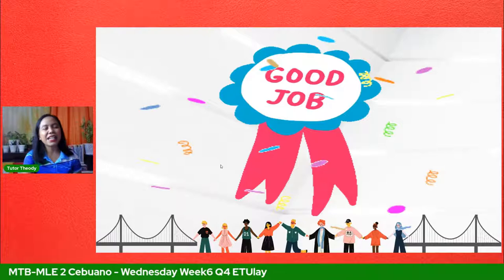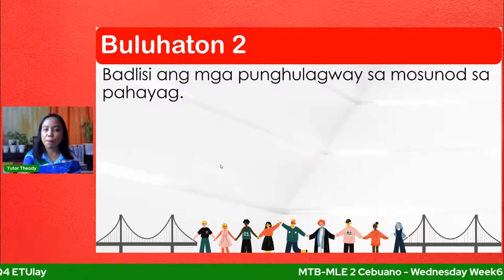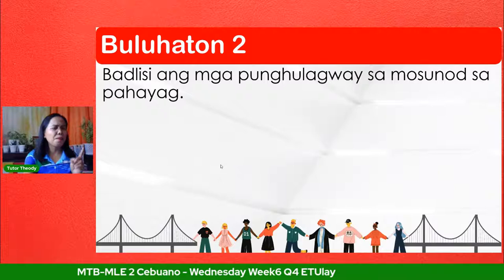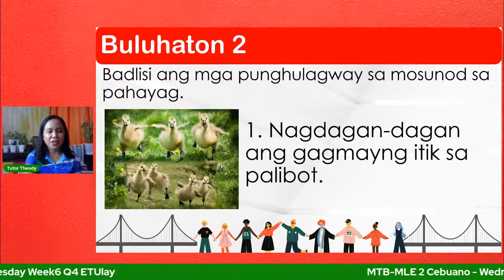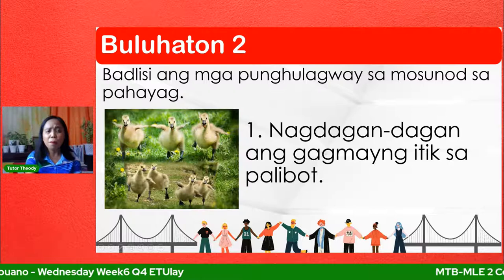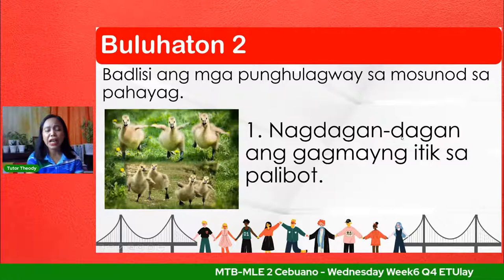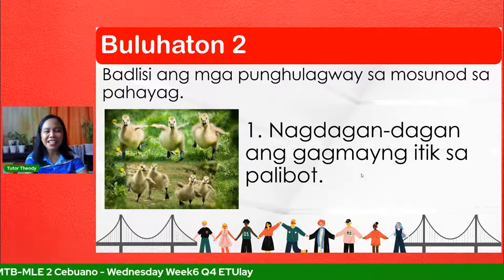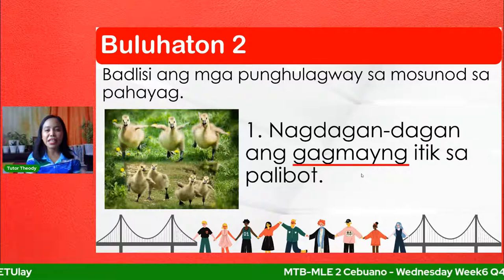Ani-ana kita sa bulohatun ikaduha — badlisi ang mga punghulagway samusunod nga pahayag. Badlisa na to ang punghulagway. Number one: nagdagandagan ang gagmayitik sa palibot. Muna mga gagmayitik, kadili pa man na sila kalupad, unang magdagandagan lang sila. Ang punghulagway kay gagmayitik — dipailan niya ang mga itik na gagmay pa, pinaagit sa pagpaila sa klase sa itik o sa gidakon sa itik.